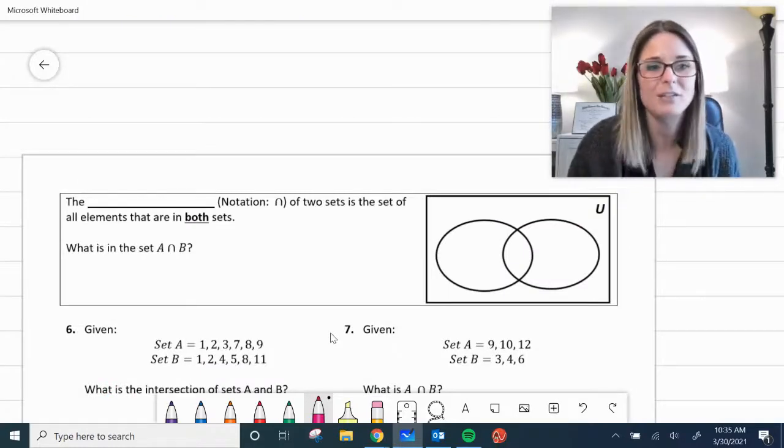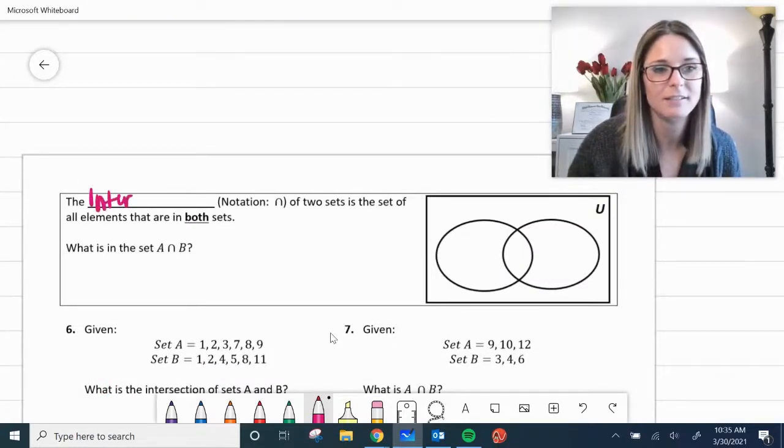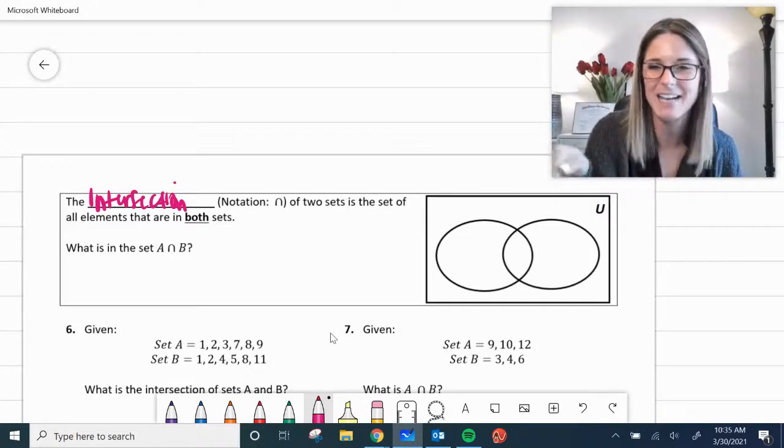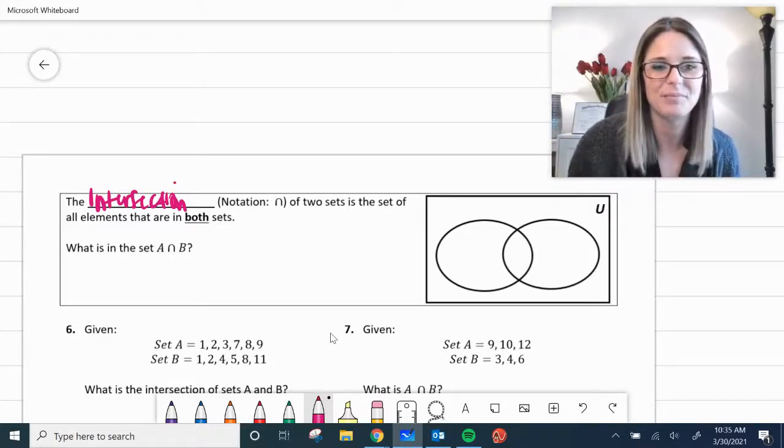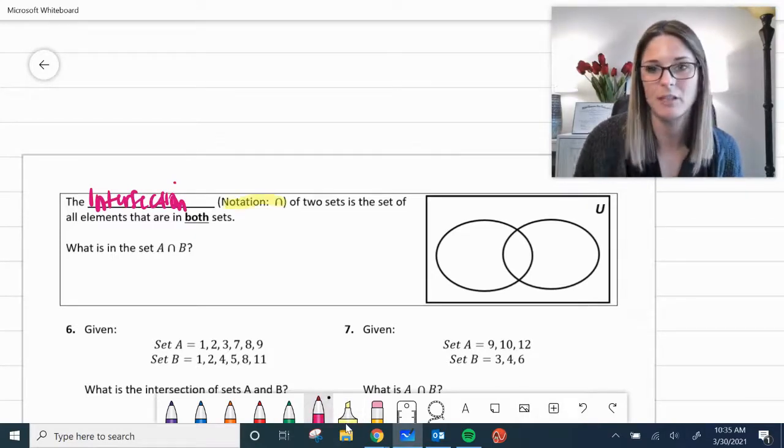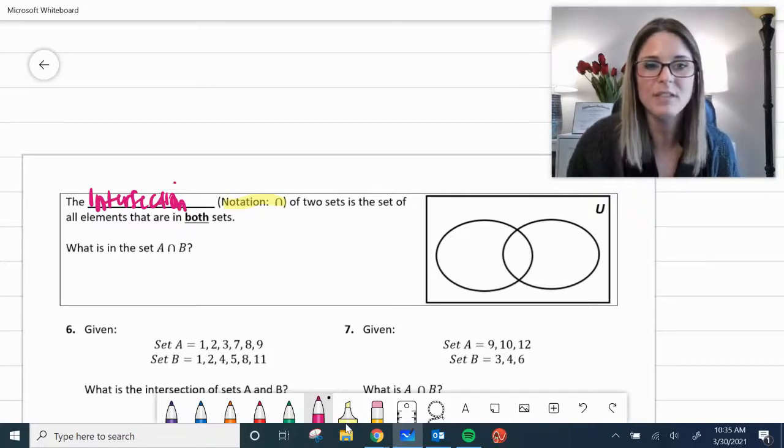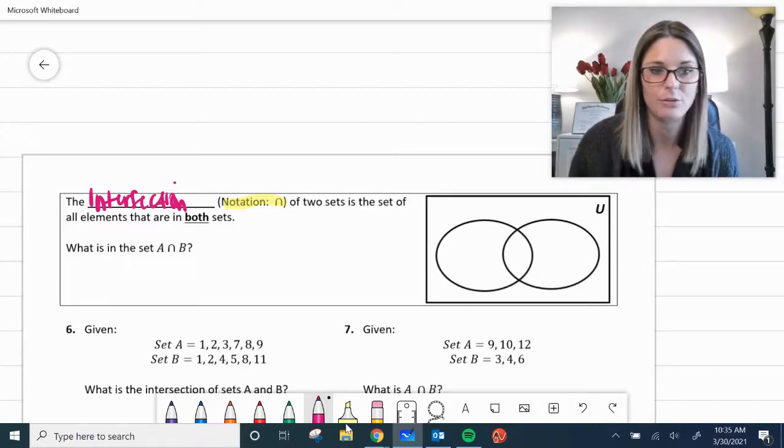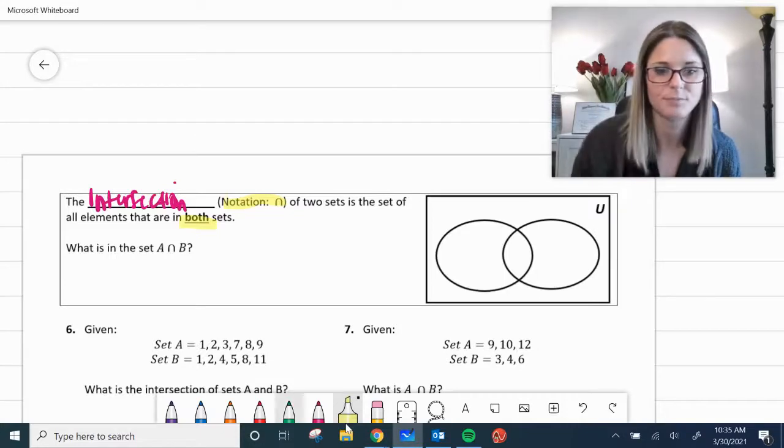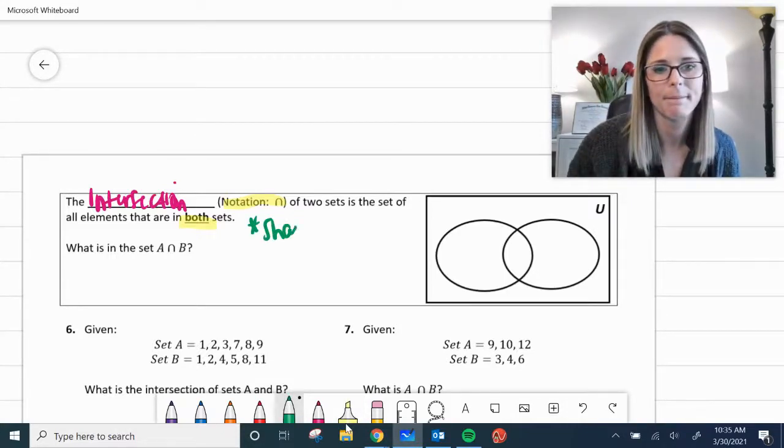Moving right along to the second page of our notes, the intersection. And it's very important that you take note of this notation. It looks like an N, but it's just a little curve there. I'll highlight it here. You're going to see that used interchangeably on delta math, and we're going to use it here. The intersection of the two sets is the set of elements that are in both. So actually, let me highlight that too. It's got to be in both. It's what they share and what they have in common there.